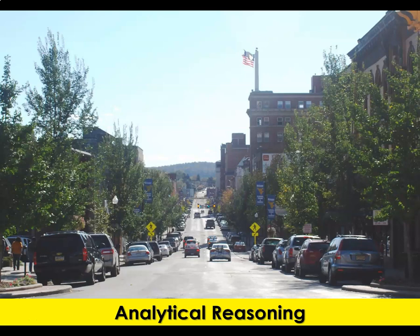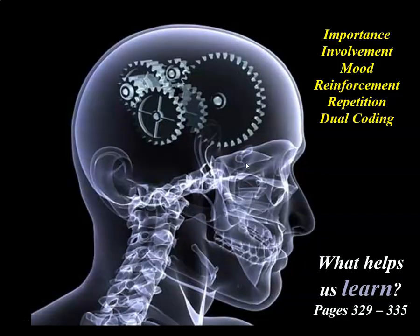Information from a credible source that contradicts our existing beliefs will often trigger analytical reasoning. When you first moved to Morgantown, learning where the one-way streets are and how to navigate the downtown area requires the highest form of learning — analytical reasoning — because your involvement is very high. Marketers know that the strength of learning is enhanced by six different factors: importance, message involvement, mood, reinforcement, repetition, and dual coding.